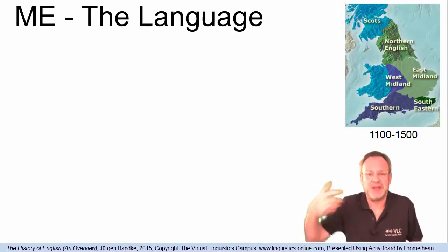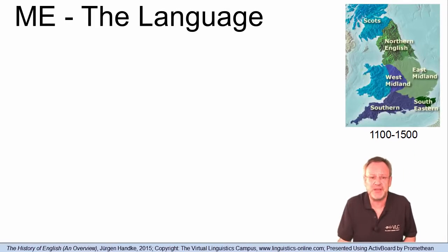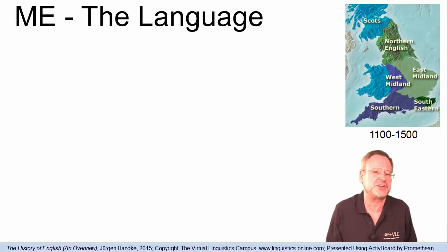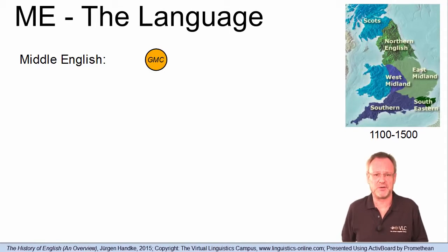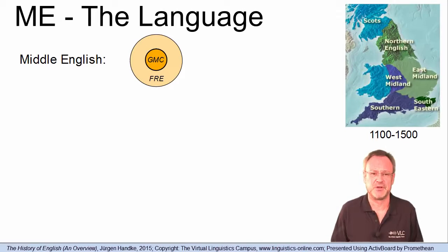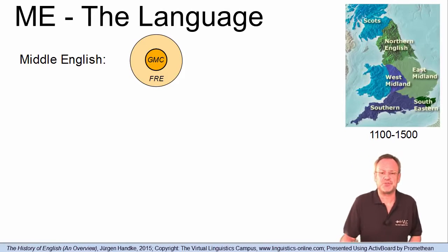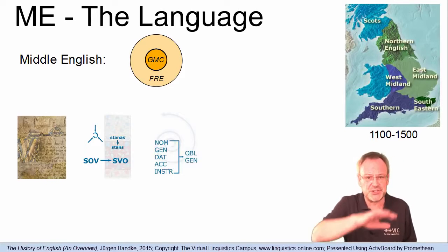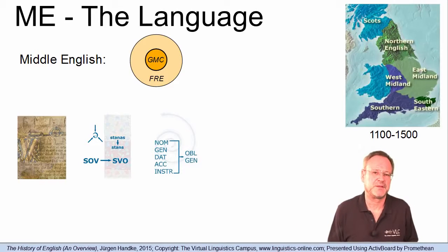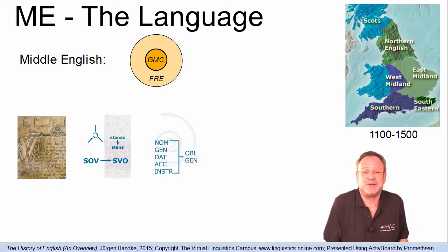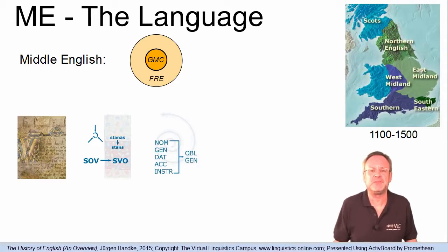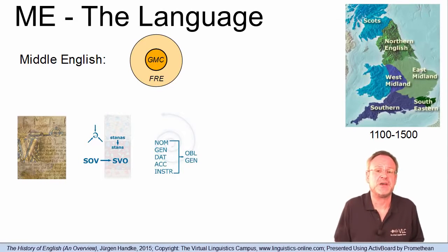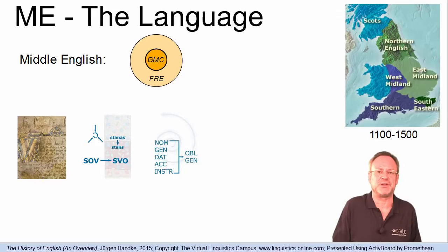Due to Latin and French influences, a new language had evolved by the mid-14th century. Middle English was Germanic at the core but had an extensive Roman vocabulary. Furthermore, in Middle English, the structural complexity of Old English had disappeared. The many linguistic developments which identify the Middle English period are most evident in the poetry and prose of the second half of the 14th century.